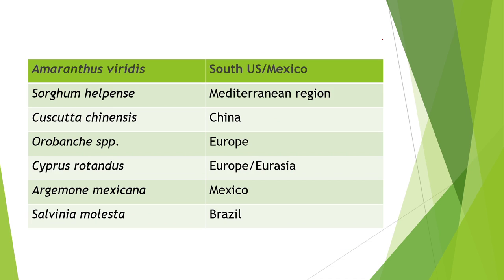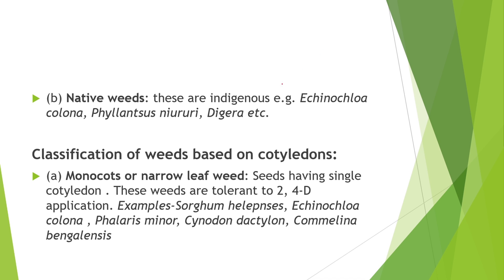Amaranthus viridis introduced from South US or Mexico. Sorghum halepense from the Mediterranean region. Cuscuta from China. Orobanche species from Europe. Cyperus rotundus from Europe. Argemone mexicana from Mexico. And Salvinia molesta from Brazil. These are the alien weeds. Next is native weeds — indigenous weeds originated from India only. Examples are Echinochloa colona, Phyllanthus niruri, and Digera species.